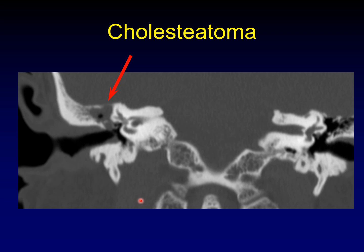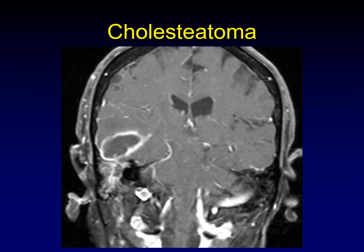Here's an example of cholesteatoma filling the epitympanum and eroding the ossicles — the tegman has thinned to the point of non-existence. It doesn't look different from normal thinning, but the presence of cholesteatoma underneath clues you in. One of the reasons it's important to treat cholesteatoma is that if it extends through the tegman, it can result in brain abscess — a classic long-term sequela, as shown here above the petrous apex.